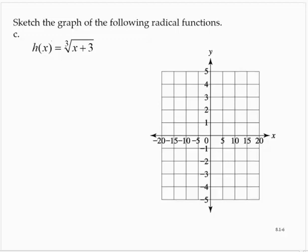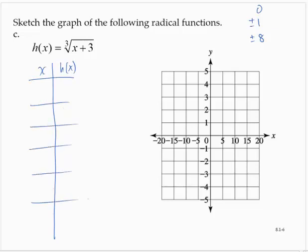Here we are given a cube root. It's an odd root, so it's going to go on forever in either direction. Now we want to think about perfect cubes: 0, positive and negative 1, positive and negative 8. I'm going to center on the value of x that makes the radicand 0, which is negative 3. Negative 3 gives me the cube root of 0, which is 0.